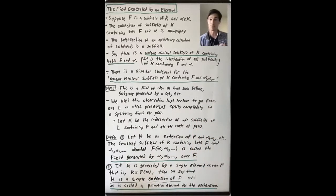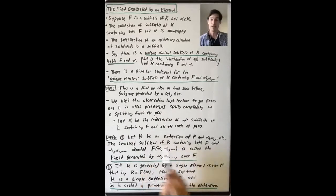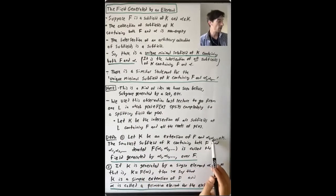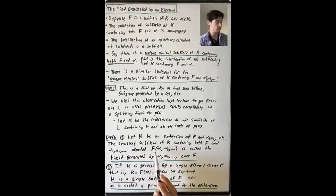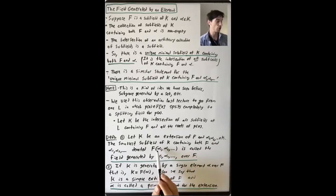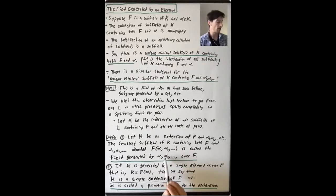This is going to get some official terminology. If we let K be an extension of F and alpha-1, alpha-2, up through some arbitrary collection of elements in K, the smallest subfield of K containing both F and this collection of elements is denoted F(alpha-1, alpha-2, ...), or F adjoin alpha-1, alpha-2. This is the field generated by these elements alpha-1, alpha-2, and so on, over F.